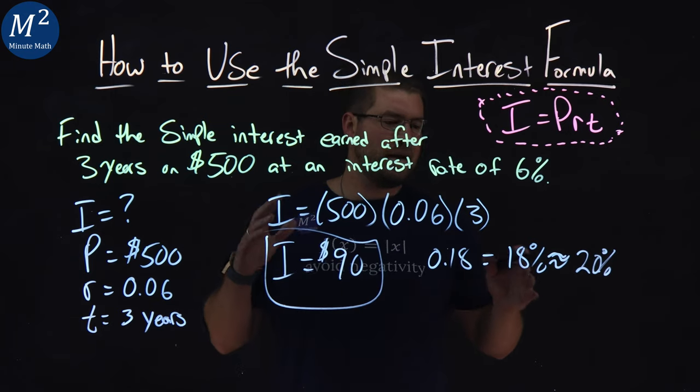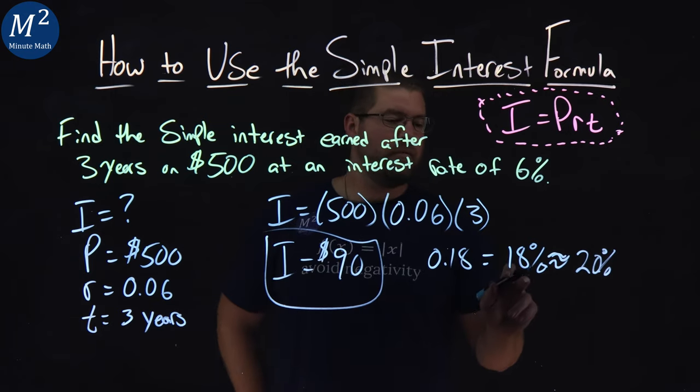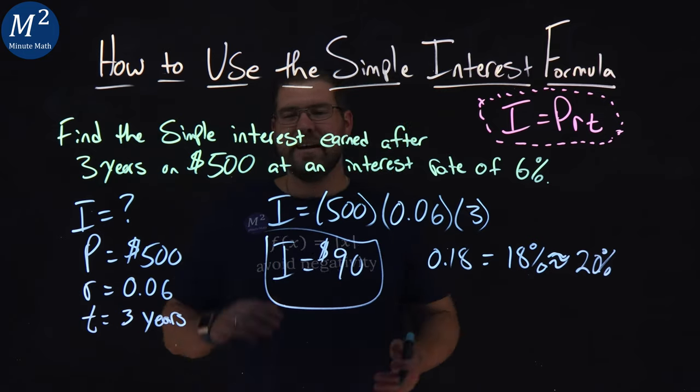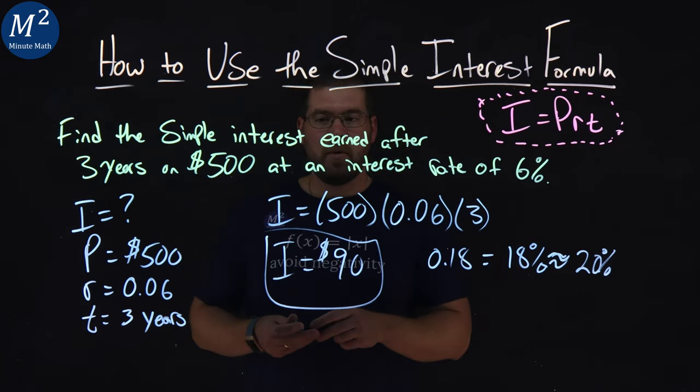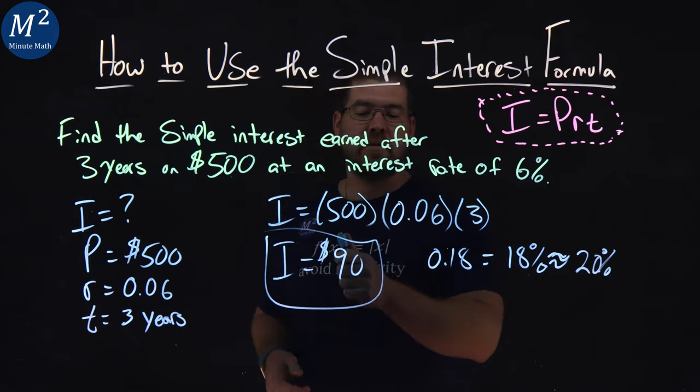20% of 500 is 100, which is pretty close to our answer. So it's a way to look at this, find a percent close to it and see if it makes sense. But either way, after all of this, our final answer is $90.